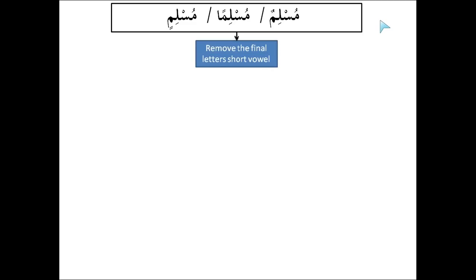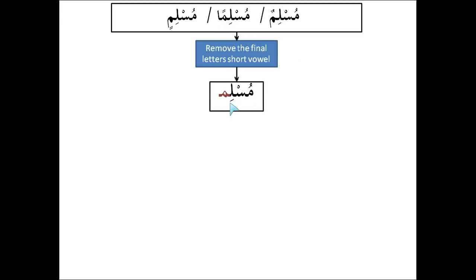The first step is we must remove the final letter's short vowel. In other words, the final letter is ميم — remember, the alif is not considered the final letter because it's a spelling convention — so it's still the ميم which is the original final letter. So if we do that, we will get مسلم with no حركة or سكون on the ميم.